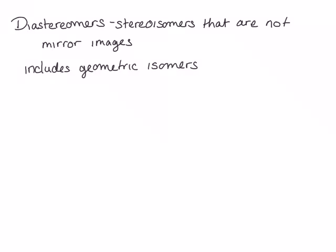Geometric isomers, or cis-trans isomers, exist because of the lack of rotation around a double bond or ring. The definition also includes molecules that have more than one chiral center, but are not enantiomers — mirror image isomers.